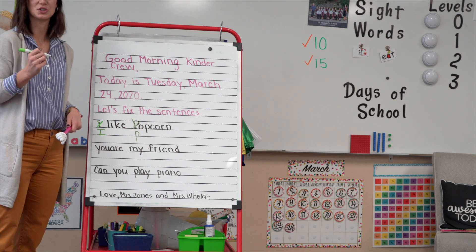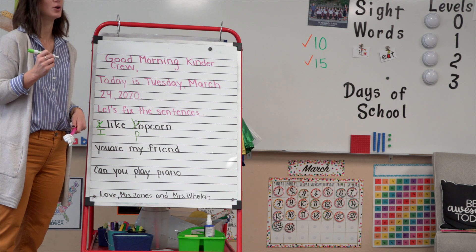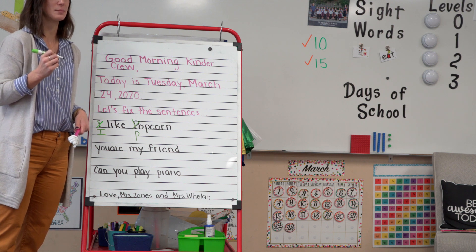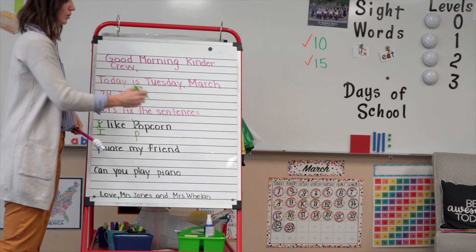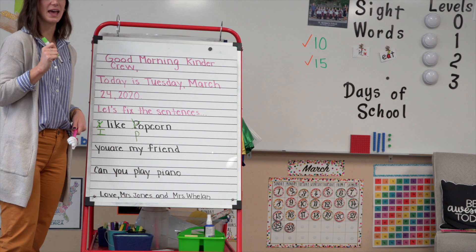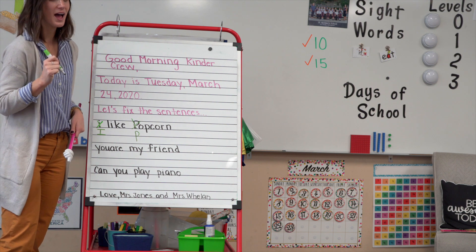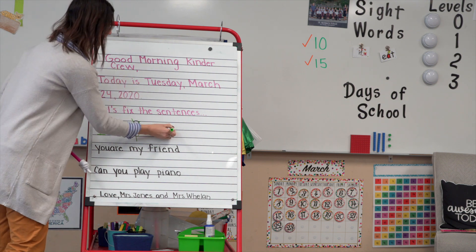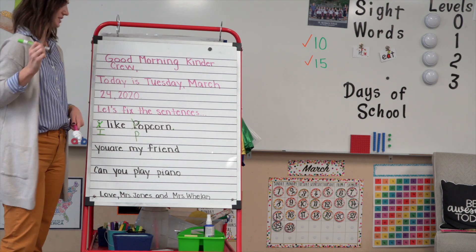Let's look at the end of our sentence. We're missing something. What are we missing? What goes at the end of all of our sentences? A period. So we need to make sure we have a period at the end of our sentence.